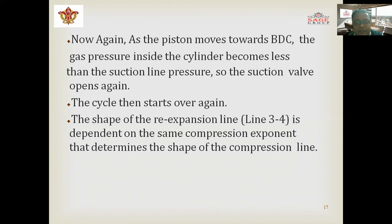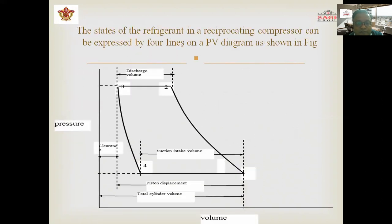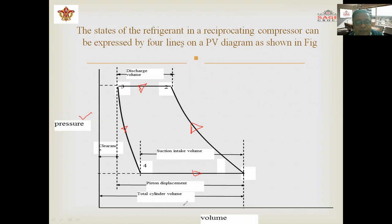The shape of the re-expansion line from point three to four is dependent on the type of compression depicted in the figure. Compression is shown from line one to two, called polytropic compression. From two to three is the discharge of air. When the piston has clearance volume, the gas re-expands from three to four in a polytropic manner, and from four to one at constant pressure, supplying gas into the cylinder. This is the PV diagram with the various conditions given.